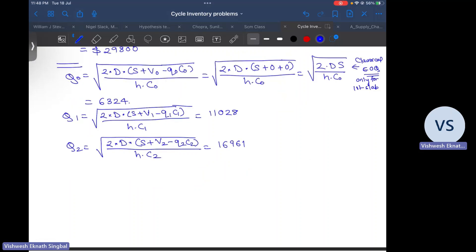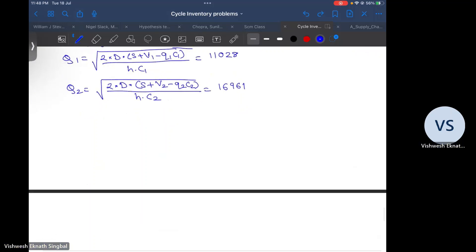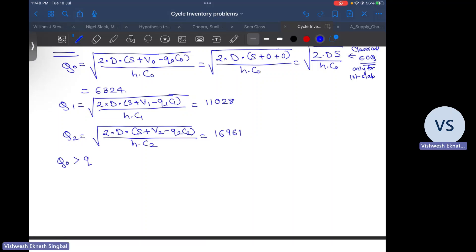See, we have got three quantities, but these quantities need not be the ones that we order because we have to first check where on this particular graph these quantities fall. So now we check. We have q0 at 6324. q0 is greater than q1, which is 5000, therefore we set q0 star equal to q1, that is 5000. Likewise, we know that q1 is greater than q2, that is 10,000, so we set q1 star equal to q2, equal to 10,000.